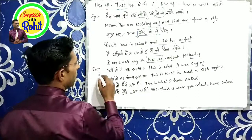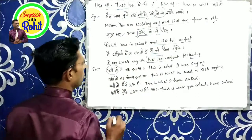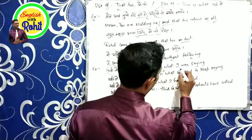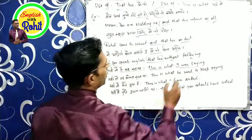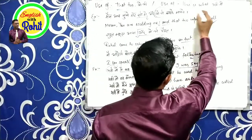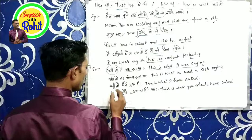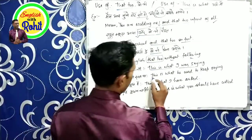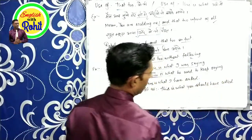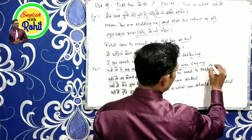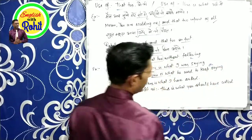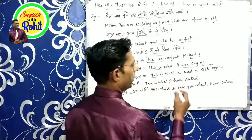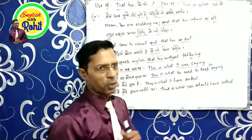Next, let's look at 'this is what' — yehi toh. This is what I was saying. Yehi toh main keh raha tha. Yehi toh woh bolta rehta tha — This is what he used to keep saying, or he used to keep on saying.